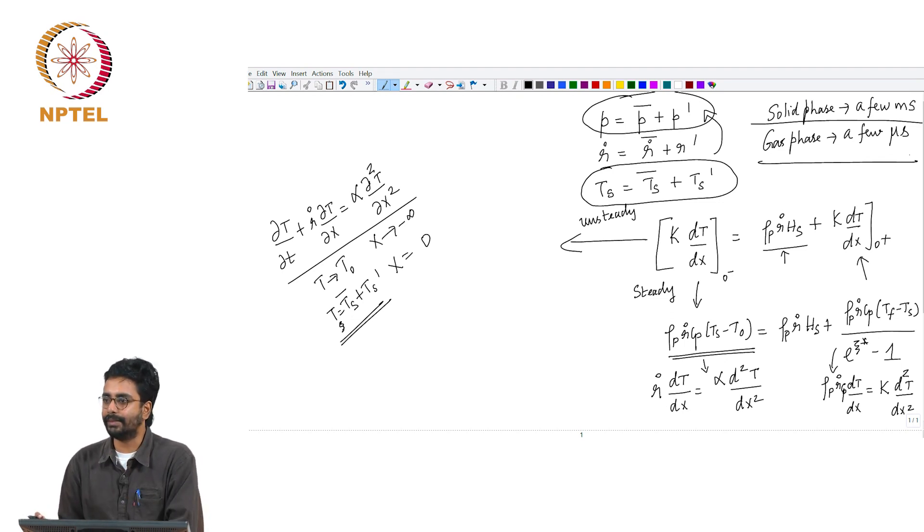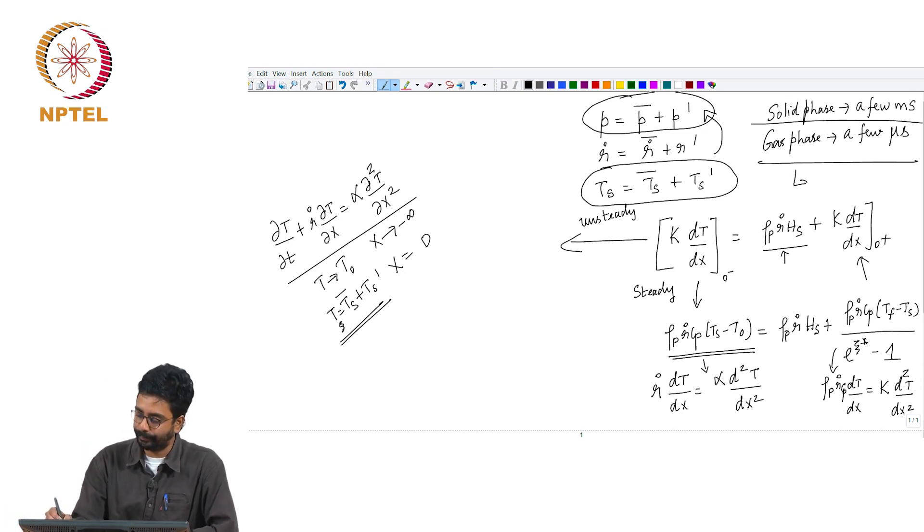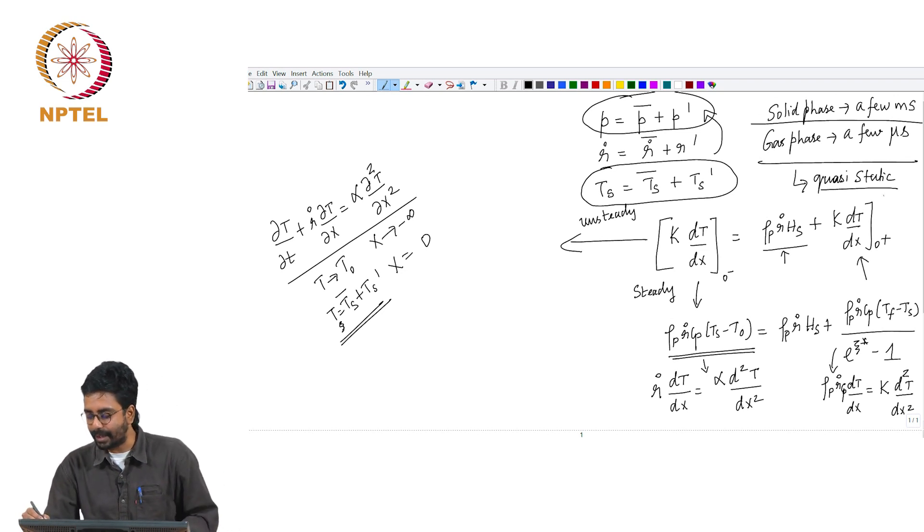In a few milliseconds, when the pressure changes from the peak value to the lowest value when it oscillates, the gas phase has sufficient time to adjust to the changes in pressure. Therefore, the gas phase can be considered quasi-static. That means we do not need an unsteady version of this term. We can use exactly the same equation that we have been using and assume that it instantaneously adjusts to changes in temperature and pressure.